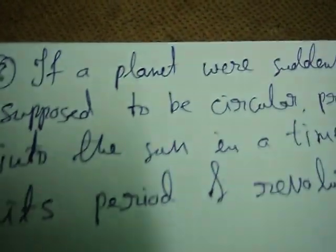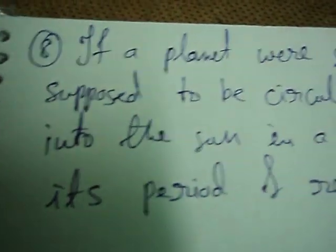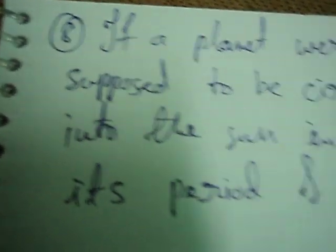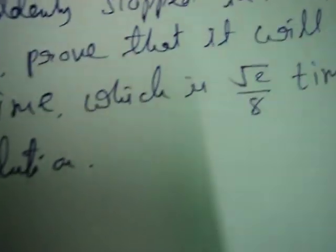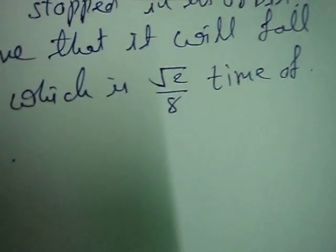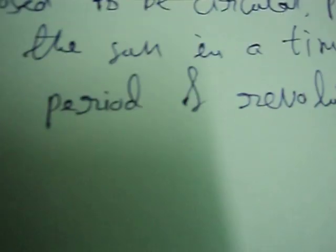The next problem is: if a planet were suddenly stopped in its orbit, supposed to be circular, prove that it will fall into the sun in a time which is equal to square root of 2 by 8 times the time period of revolution.